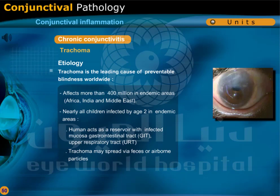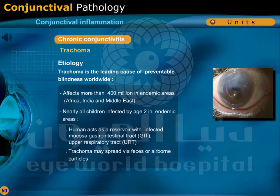Trachoma is the leading cause of preventable blindness worldwide. It affects more than 400 million in endemic areas including Africa, India, and the Middle East. Nearly all children are infected by age 2 in endemic areas. Humans act as a reservoir with infected mucosa of the gastrointestinal tract and upper respiratory tract. Trachoma may spread via feces or airborne particles.